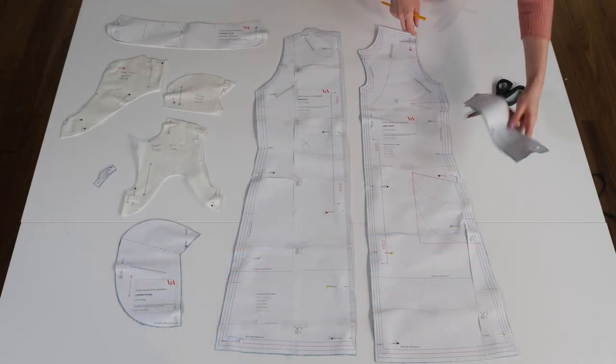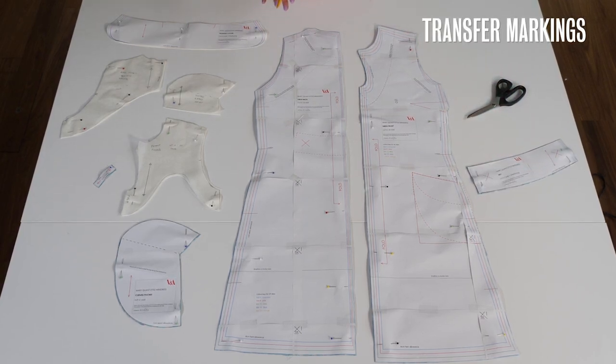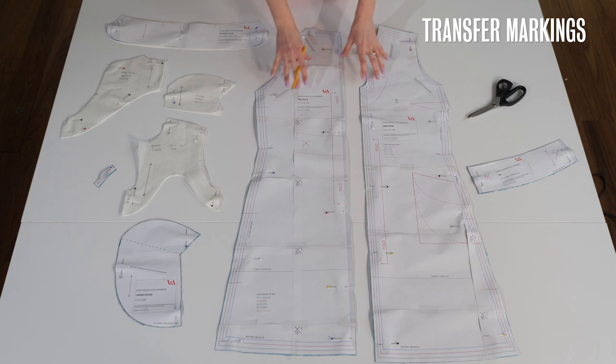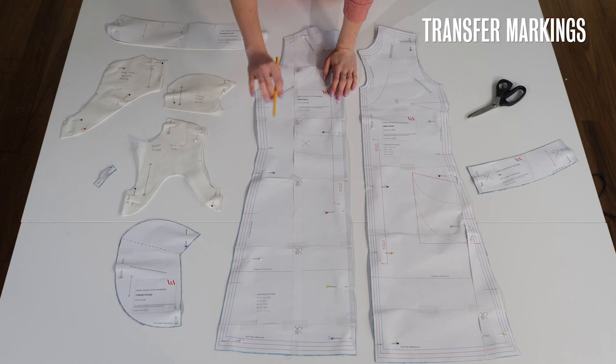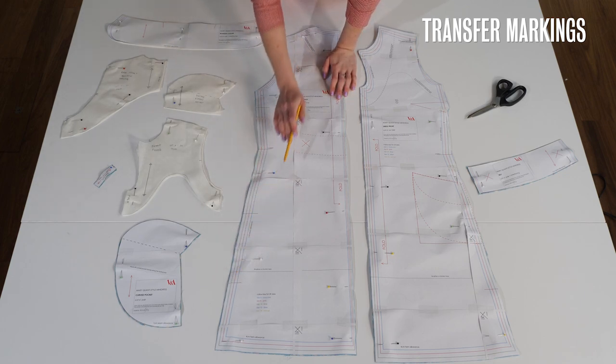So now I have all my pattern pieces cut out and it's time to make sure I transfer all of the markings on the paper pattern onto the fabric. So the notches which are going to help you line up your seams as you're sewing are marked by these red lines across the pattern.